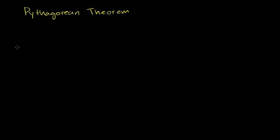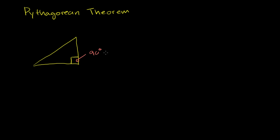Let me tell you what the Pythagorean Theorem is. If we have a triangle, the triangle has to be a right triangle, which means that one of the three angles in the triangle has to be 90 degrees. You specify that it's 90 degrees by drawing that little box right there — that is a 90 degree angle, or we could call it a right angle. A triangle that has a right angle in it is called a right triangle.